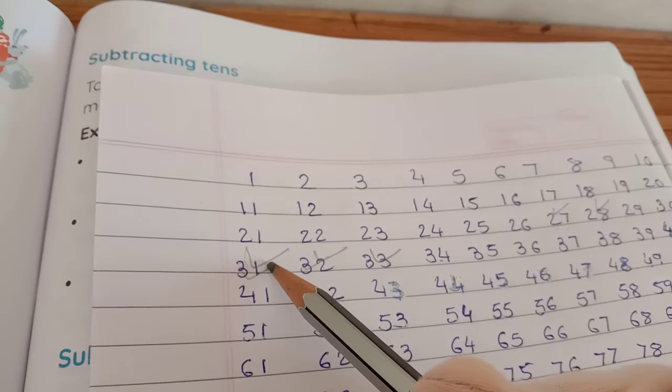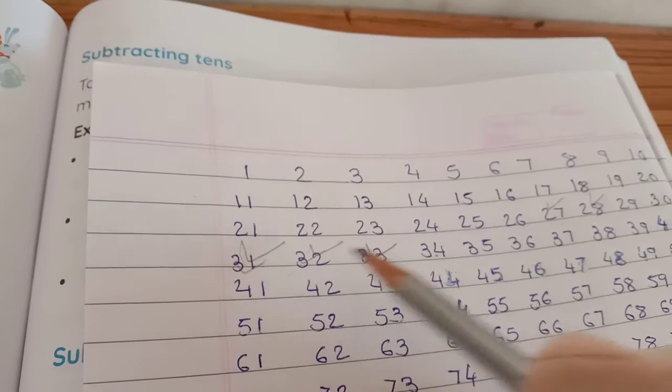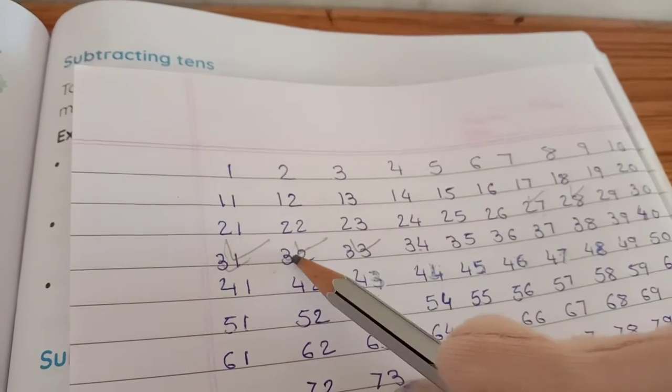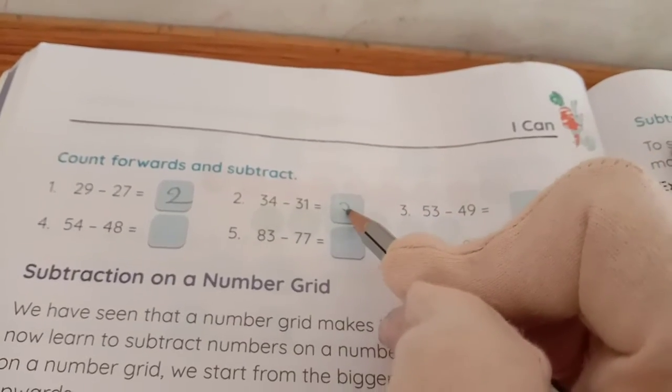33, we have to stop this 31. So how many steps we have to go back? 1, 2 and 3 steps. So we have to write in here number 3.